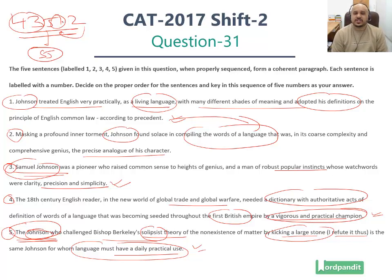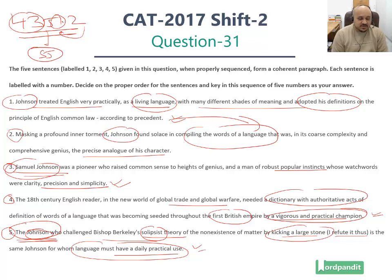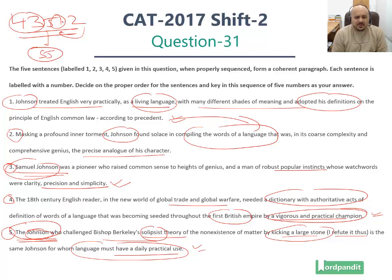So this is how you solve this particular question — a tough, complicated question where you need to understand the small clues. You need to understand the fact that Samuel Johnson needs to come first before other references to Johnson, and that 'the Johnson' is a phrasing used for emphasis. These are small link-ups and clues you need to use in order to identify the answer. Hopefully you are clear with the question. Thank you very much for watching this video and happy learning.